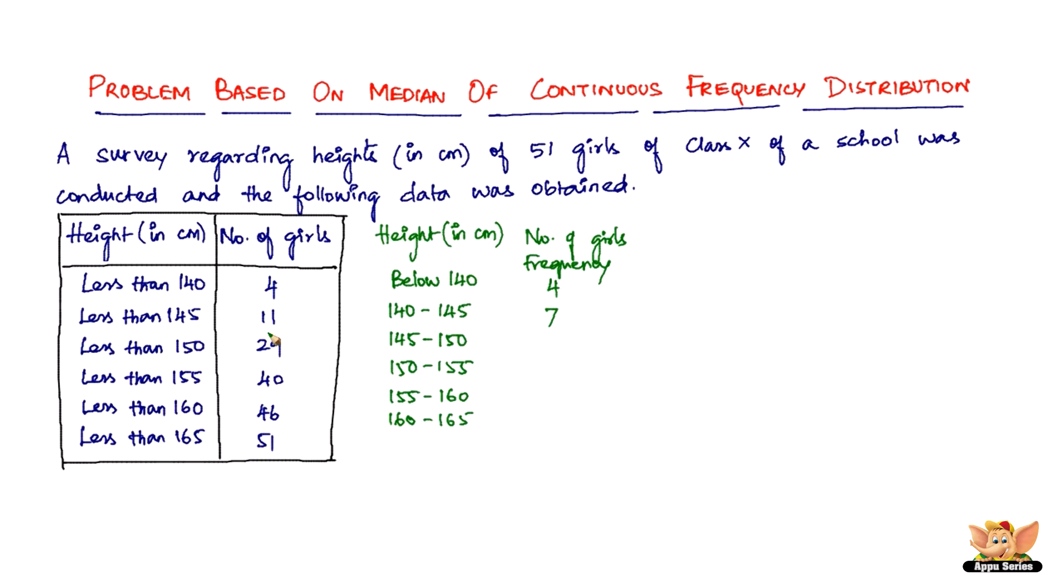So you need to go the reverse way. Now in the previous problems we used to find, now this is the cumulative frequency which is mentioned here, so we need to find the frequency. So we need to subtract: 29 minus 11 is 18, 40 minus 29 is 11, 46 minus 40 is 6, 51 minus 46 is 5. So this is the frequency. Then we get cumulative frequency CF, so cumulative frequency will be the same as this: 4, 11, 29, 40, 46, and 51.